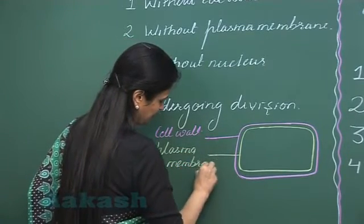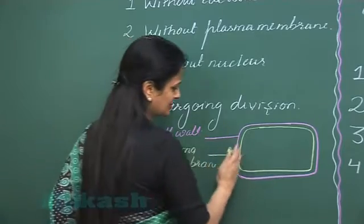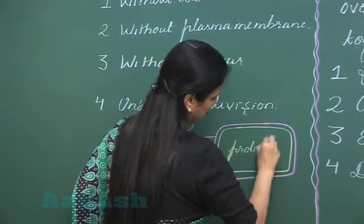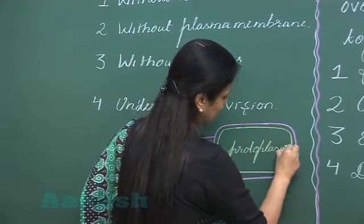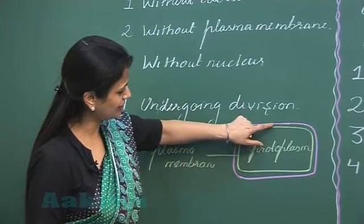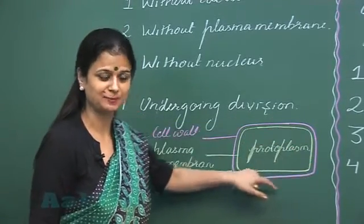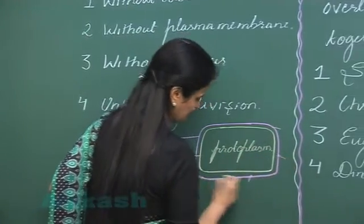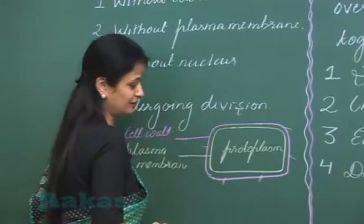Inside the plasma membrane, there is the presence of protoplast. So when in the cell the cell wall is absent, then what is left?